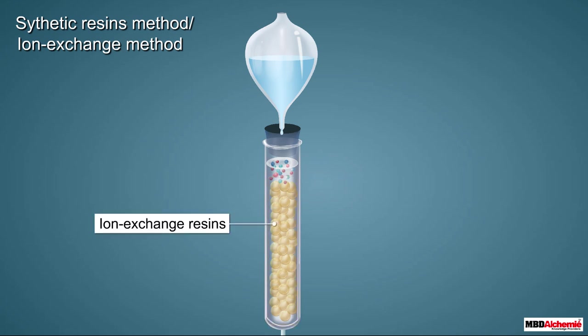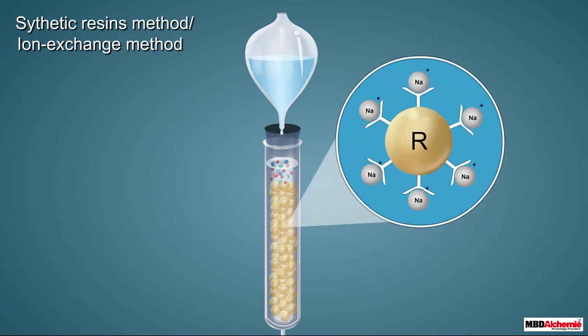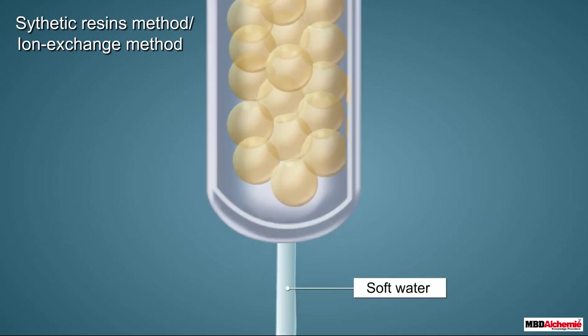The synthetic resins method uses ion exchange resins to remove hardness of water. Ion exchange resins are of various types, but the ones used to remove permanent hardness are represented as RNa. These resins are water insoluble and work by exchanging ions. When added to hard water, they exchange their sodium ions with the calcium and magnesium ions of the hard water, thereby freeing it from calcium and magnesium ions so the water no longer remains hard.